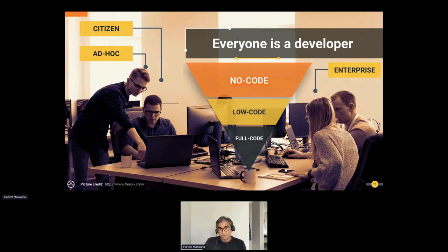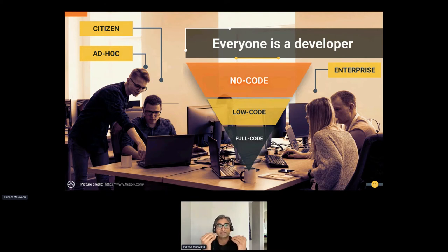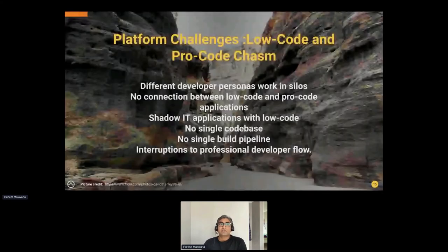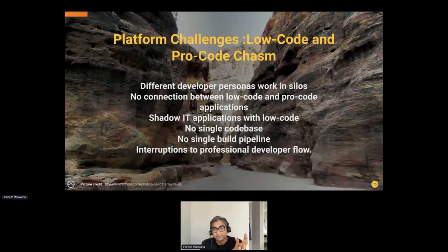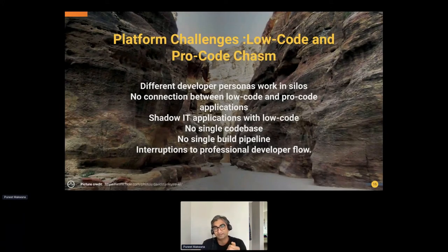To clarify: no-code refers to citizen developers, and low-code refers to ad hoc developers. These distinct developer profiles — with their different working styles and preferences — often don't align, which is what we call the low-code versus pro-code chasm. Because their working styles differ, there's no way for them to easily work together in an enterprise.